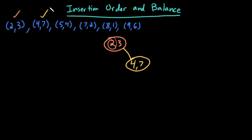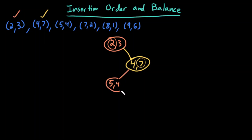Now for the next point, I start at the root. 5 is greater than 2, so I go right. Now I compare y coordinate on this level. 4 is less than 7, so this should be the left child of (4,7). So (5,4) gets inserted here.